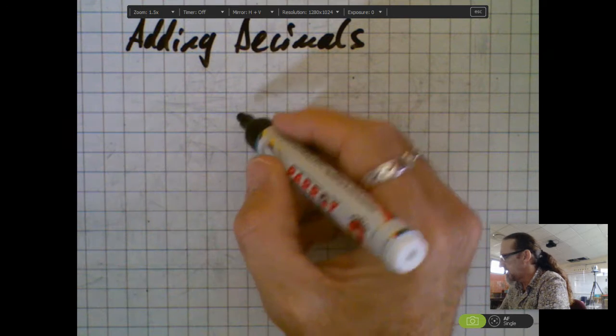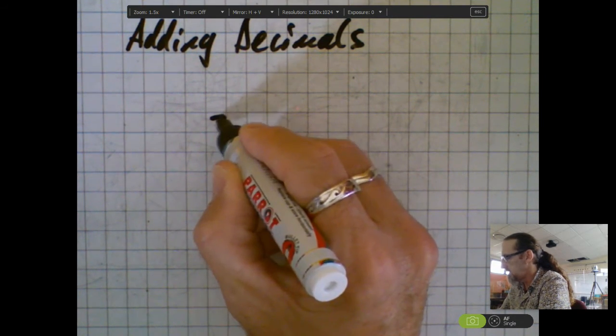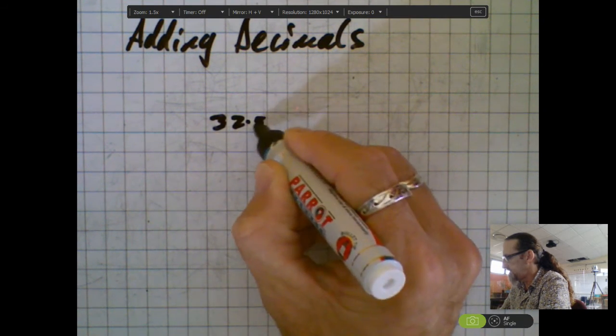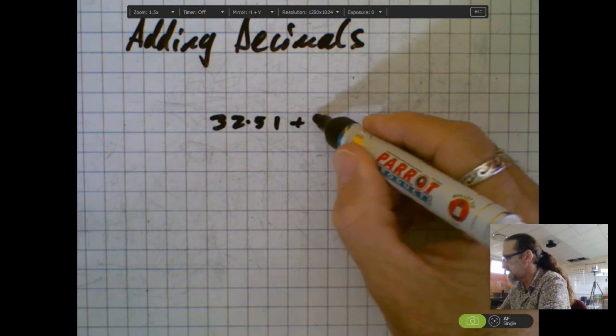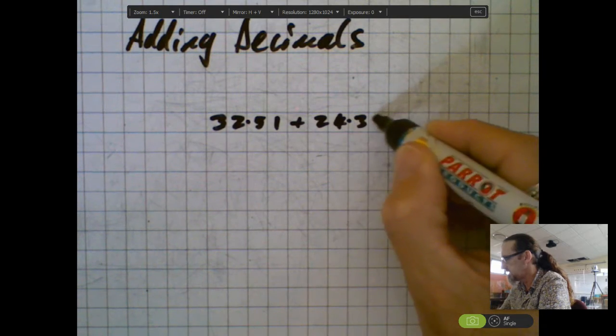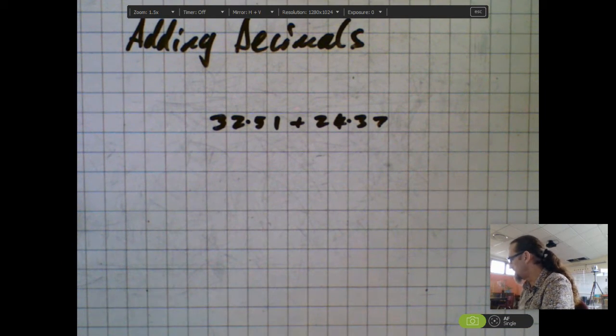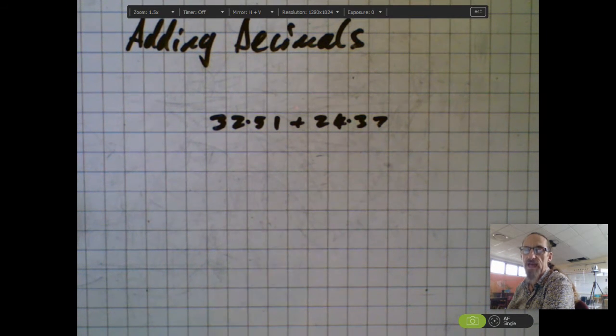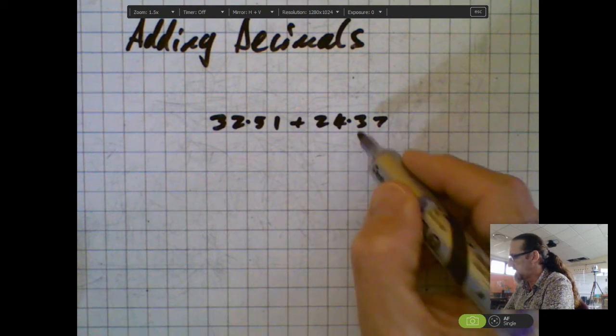Let's take a number like 32.51 and we're gonna add that to 24.37. Now you might have noticed that I've chosen some really nice numbers, but what do we need to do? We need to look at place value of these numbers.